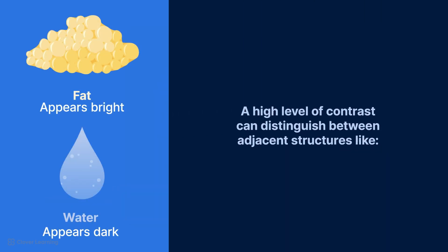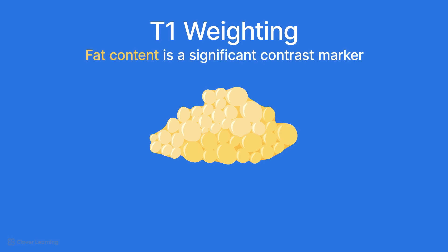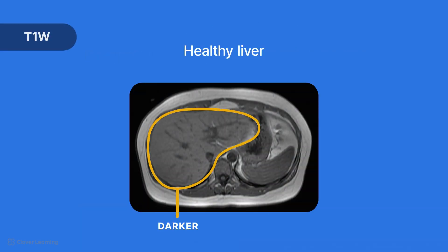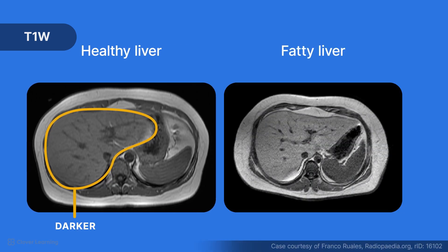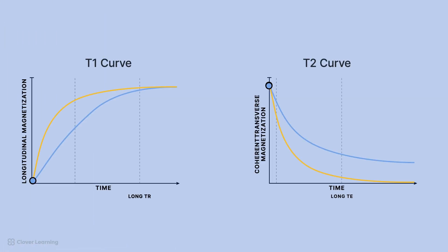T1-weighted images can be used for visualizing anatomy and pathology. They are particularly good at highlighting the contrast between fat, which appears bright, and water-containing tissues, which appear dark. This high level of contrast can distinguish between adjacent structures like muscle, fat, and organs. This ability to differentiate between fat and water-containing tissues makes T1 weighting the preferred choice when imaging areas where fat content is a significant contrast marker. For example, when imaging the liver, a healthy liver has minimal fat content. However, pathologies like fatty liver disease and tumors can alter the fat content, and since fat has a short T1 recovery time, these pathological markers will appear brighter on the T1-weighted MRI image.